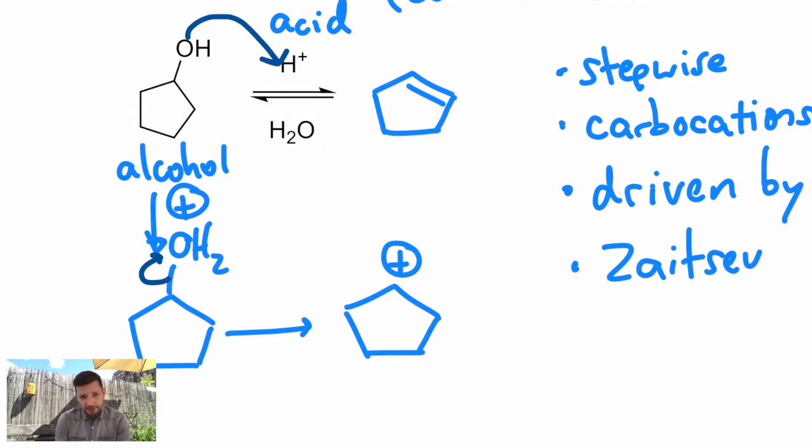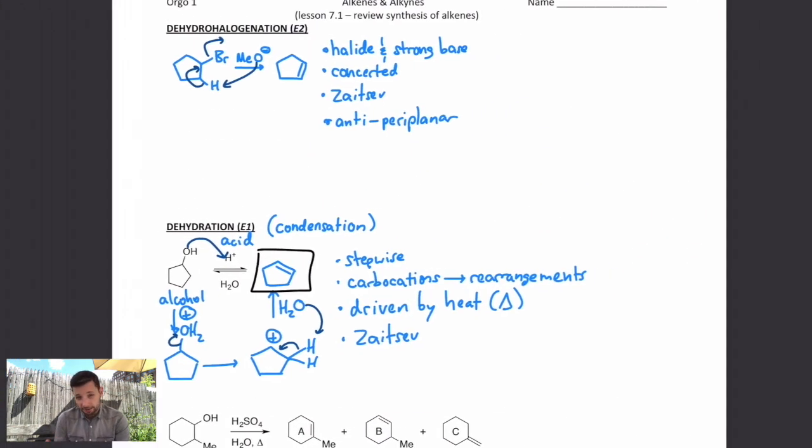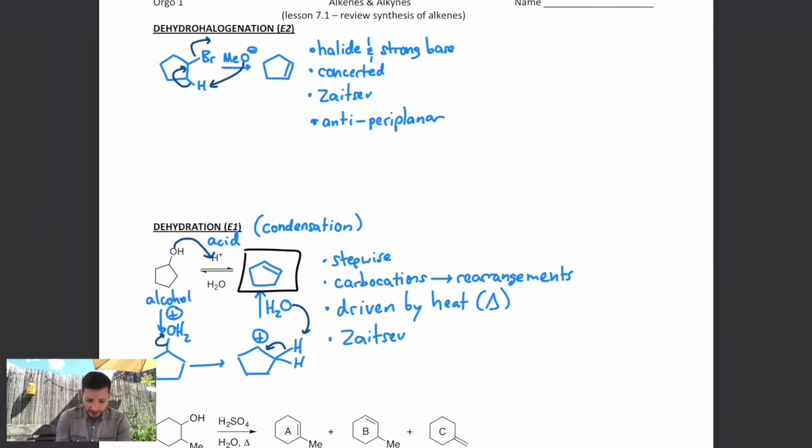And it's that carbocation that turns into the alkene, the water molecule that just left. You could actually use as a weak base. It'll take away one of the beta hydrogens in a separate step. That CH bond will break, and that's how you get your pi bond and form your alkene. So those are the two main ways that we know to make alkenes from alkyl halides and from alcohols, functional groups that we also know how to make a little bit of.